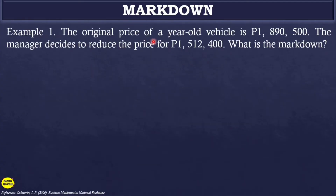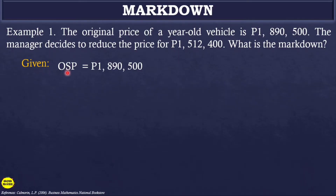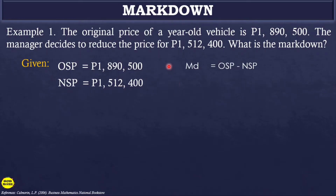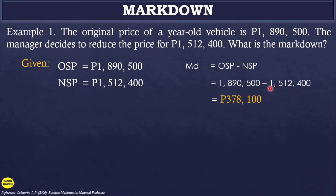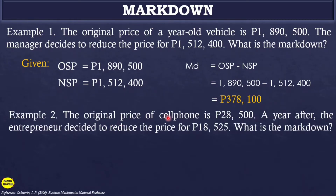Example 1: The original price of a year-old vehicle is 1,890,500. The manager decides to reduce the price to 1,512,400. What is the markdown? The given are: Original Selling Price = 1,890,500 and New Selling Price = 1,512,400. We subtract: 1,890,500 − 1,512,400 = 378,100. The markdown amount is 378,100 pesos.